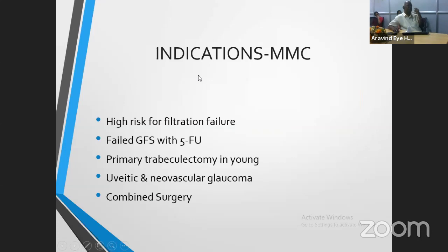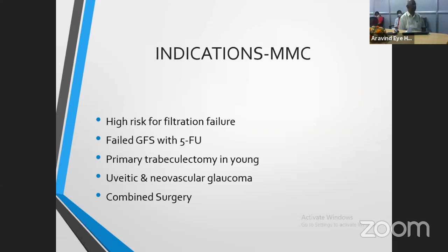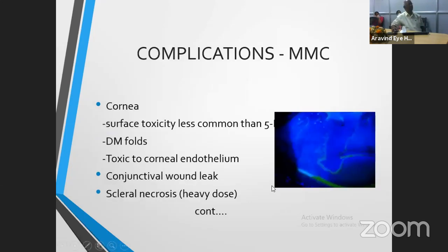We have started to use mitomycin in all cases of glaucoma, starting as a primary procedure with low concentration, and especially in cases with high risk for filtration failure. Indications include repeat surgery, neovascular glaucoma, and uveitic glaucoma. Complications of mitomycin: it is not toxic to epithelium but highly toxic to endothelium. Because of that, you can produce hypotony, and the mitomycin blebs are more avascular, large, cystic, and can go for conjunctival leak at any time.